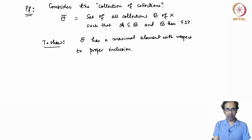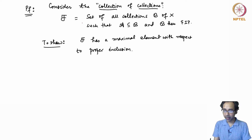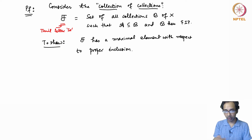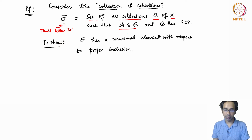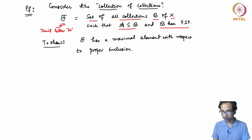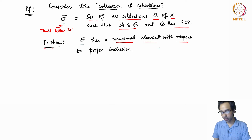To begin the proof, we consider the collection of all collections B of subsets of X such that A is a sub-collection of B and B has the finite intersection property. We want to show that this collection of collections has a maximal element with respect to proper inclusion.